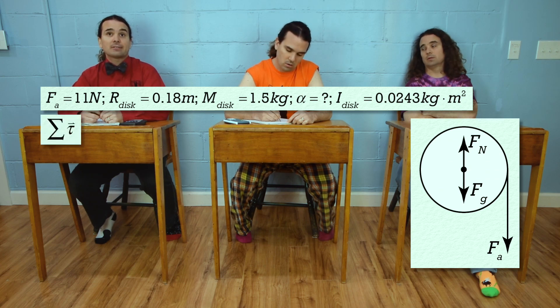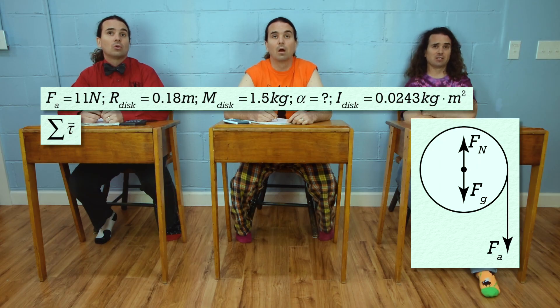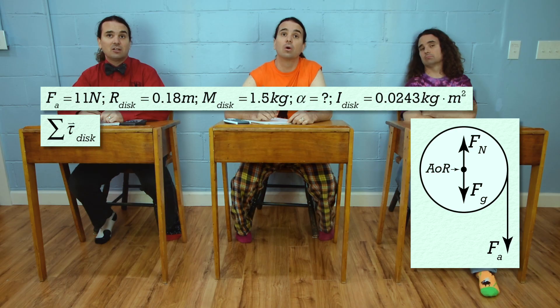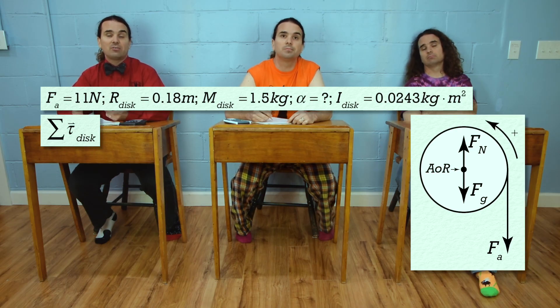Now we can sum the torques. We need to identify what we are summing the torques on and where the axis of rotation is, and we need to identify the positive torque direction. So, let's sum the torques on the disk with the axis of rotation at the axle and define the positive direction as counterclockwise which is out of the board.